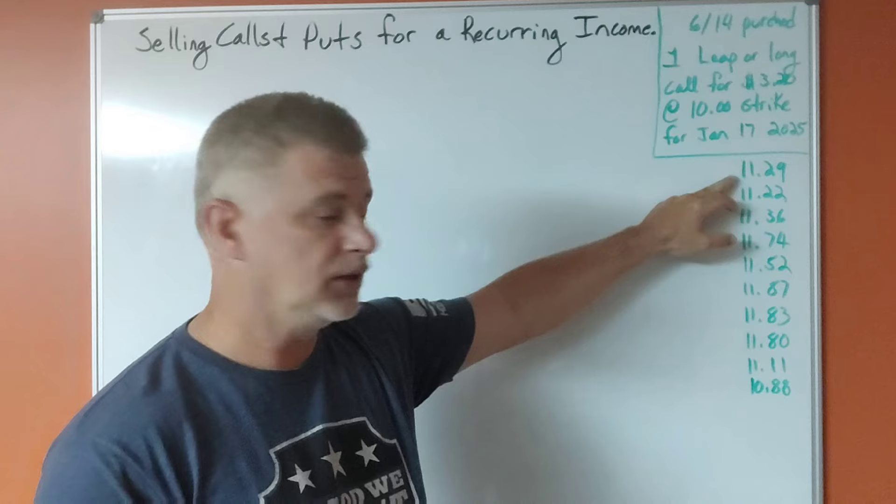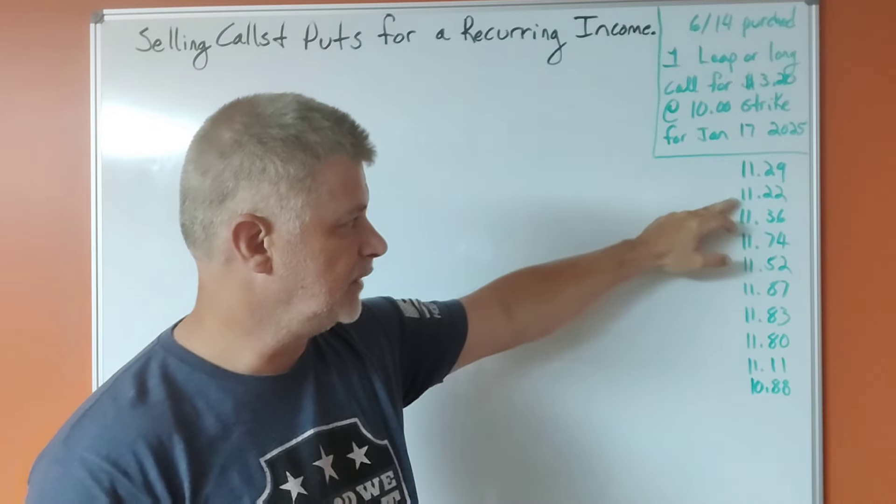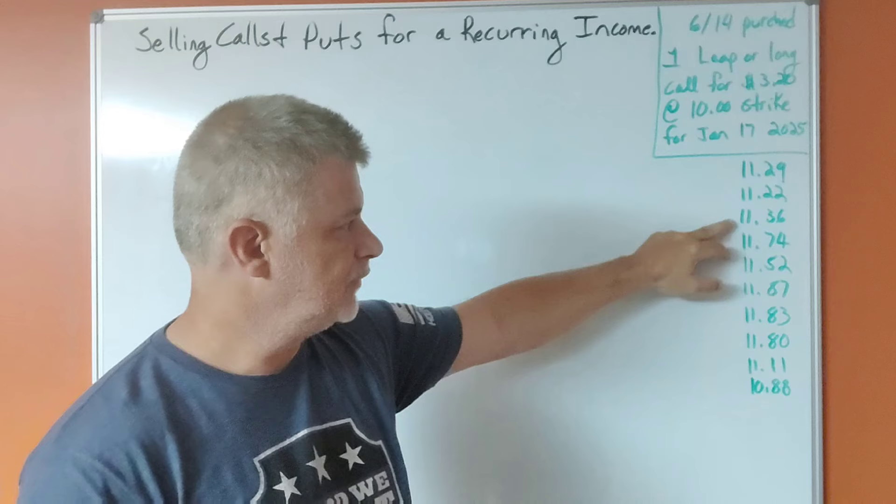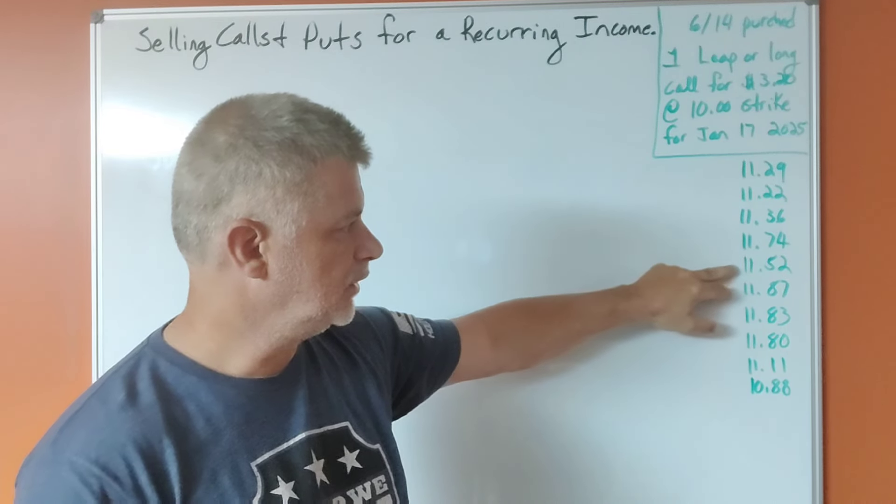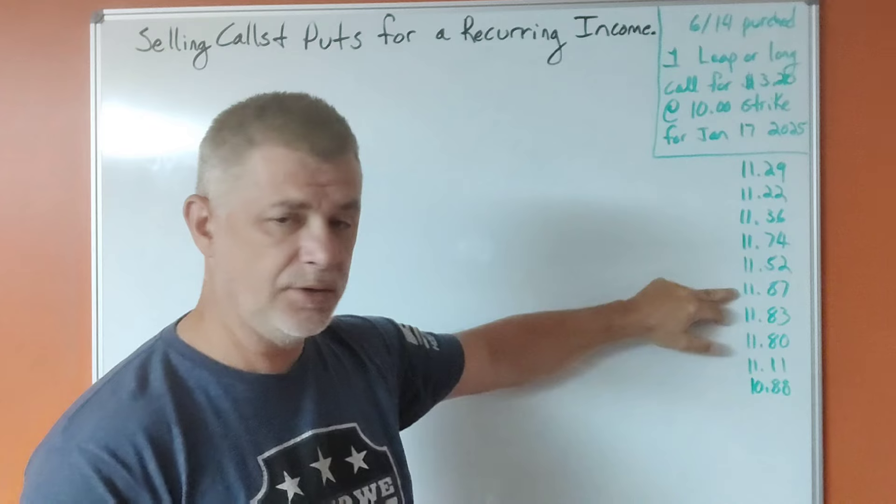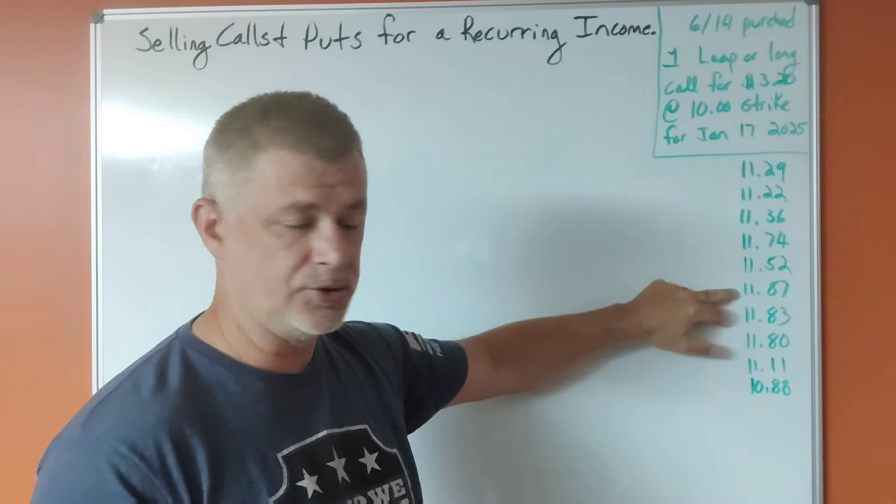Let's go back two weeks ago: it closed at $11.29, the next day $11.22—and I don't have the dates, I don't find those terribly important—$11.36, $11.74, $11.52, $11.87. So you can see Rivian is clearly in an uptrend here.